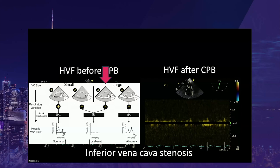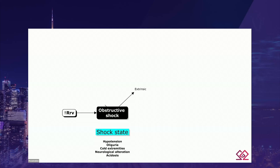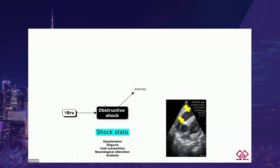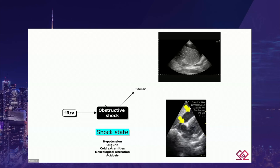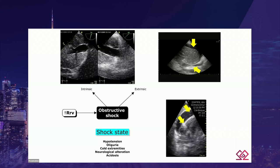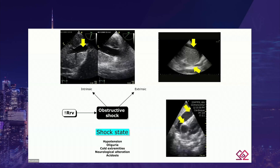In brief, a shock state with a dilated IVC and increased resistance to venous return can result from an extrinsic process — such as tamponade with RV and right atrium collapse — or abdominal compartment syndrome with a collapsed IVC and free fluid, or from an intrinsic process. Think about it in any surgical procedure where the IVC has been manipulated. This is an example of an iatrogenic IVC stenosis, showing the reduction of flow before and after correction.